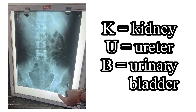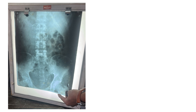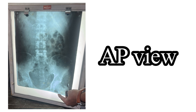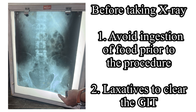This X-ray is used for examining these organs. This is the AP view, anteroposterior view, which means the X-rays come from the anterior side and go to the posterior side. Before taking this X-ray, it is necessary to clear the gastrointestinal tract, because the shadows of gases and fecal matter may obstruct the findings.